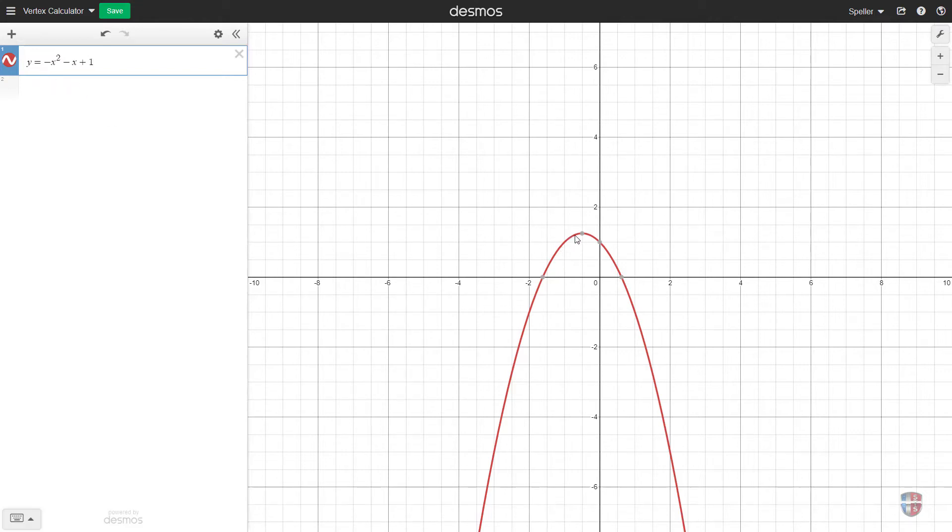With Desmos we can easily see that the vertex here is negative 0.5 comma 1.25. So let's go ahead and use some variables to allow us to use the expression that we've learned in probably algebra 2.